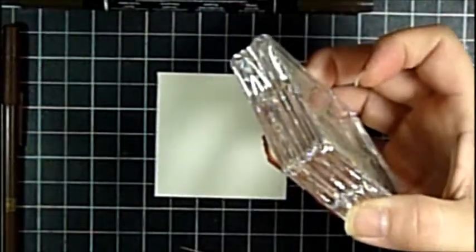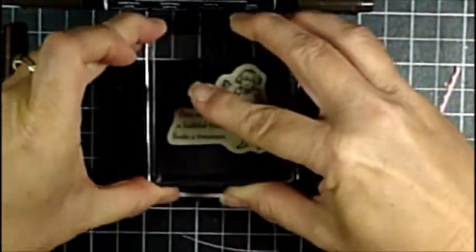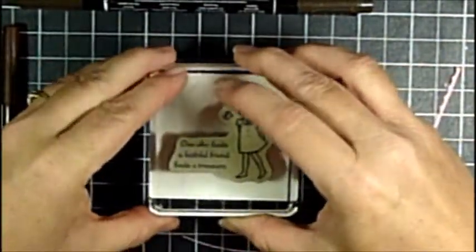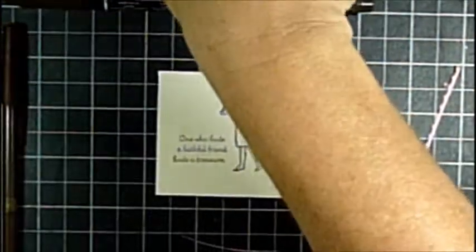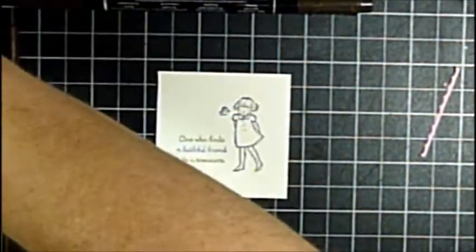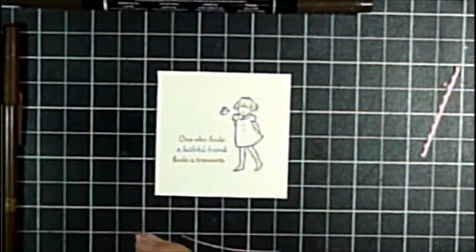I almost always use the watercolor paper and Stazon Jet Black. So I'm inking up the stamp and I just want good coverage and I'm going to stamp it. Very cute. I love this set. It'll work with any set. You can do flowers and it all works the same way.